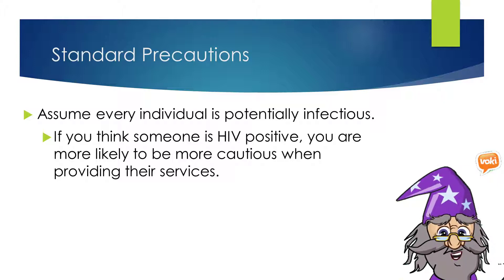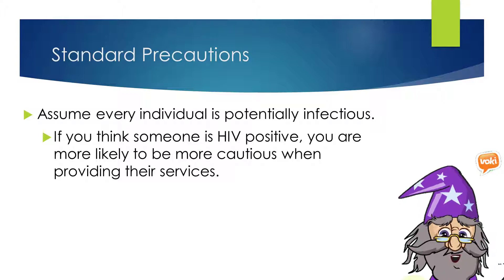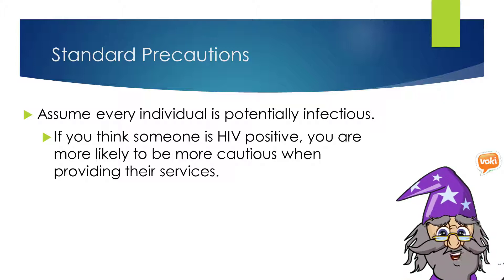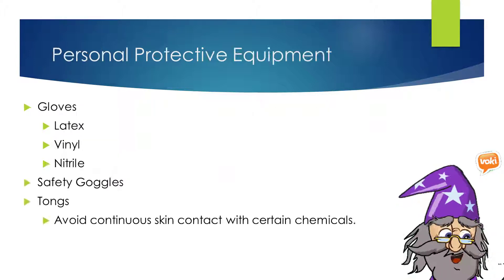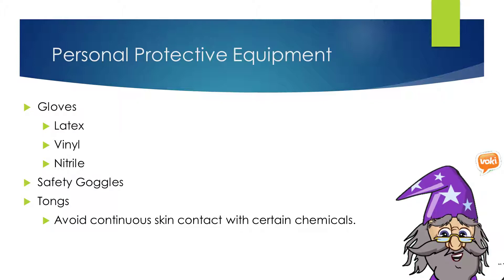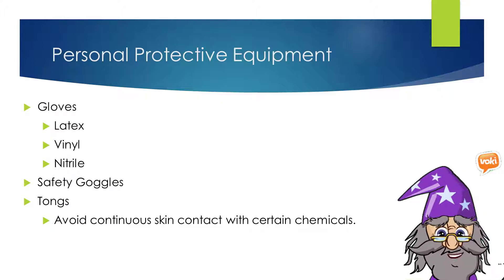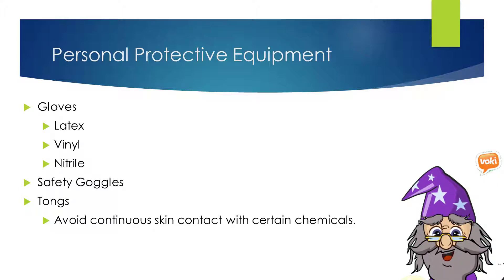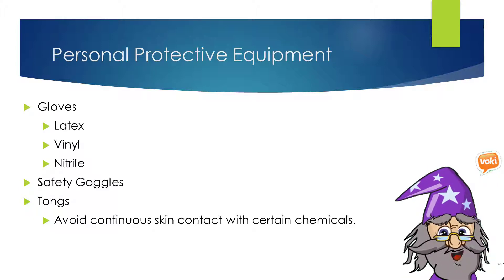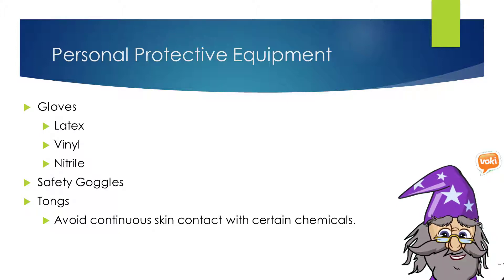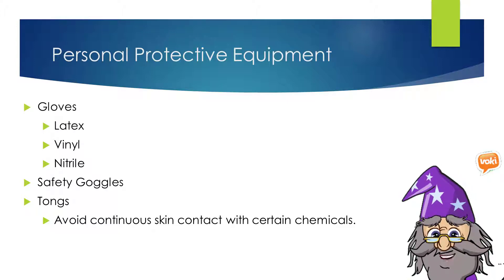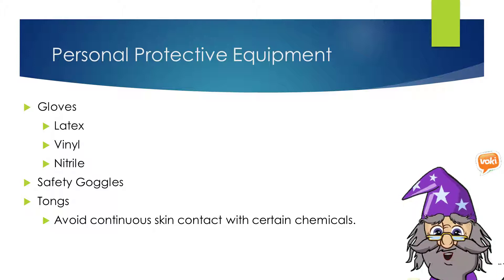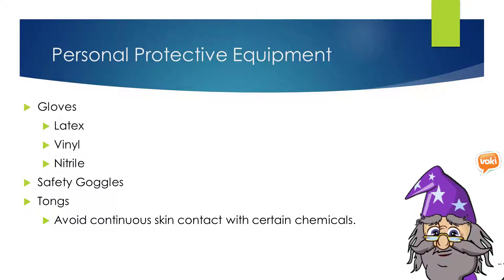If you think someone is HIV positive, you are likely to be more cautious when providing their services. In order to prevent the spread of infection and disease, some services must be performed while wearing personal protective equipment. This equipment may include items such as gloves and safety goggles, or using items such as tongs or a drain basket to avoid continuous skin contact with certain chemicals.